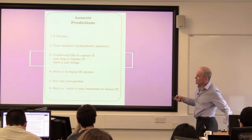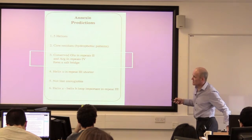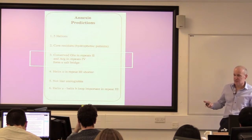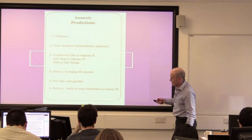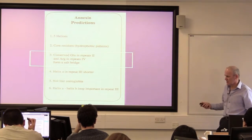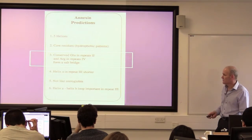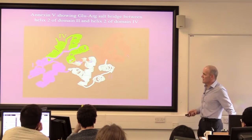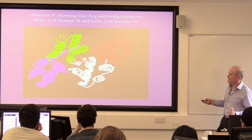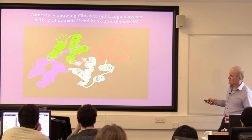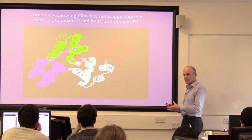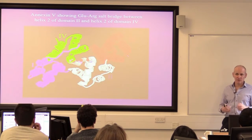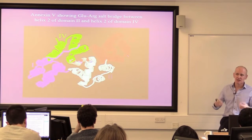So we made various predictions: predicted there were five helices, predicted which residues were in the core from the hydrophobic patterns. This conserved glutamic acid in repeat 2 and arginine in repeat 4 suggested a salt bridge. A little bit later, a group solved the first crystal structure of this family of proteins, and it looked like pretty much we got it right in terms of secondary structure, the five helices. And that salt bridge is right in the middle - it ties the whole thing together. So it's clearly a structurally important feature.